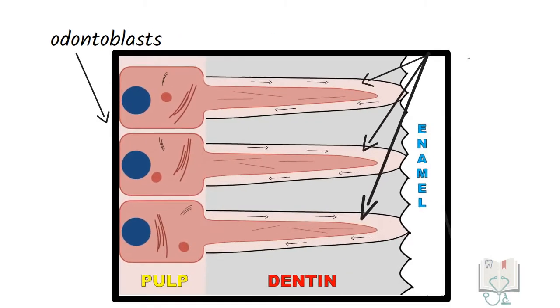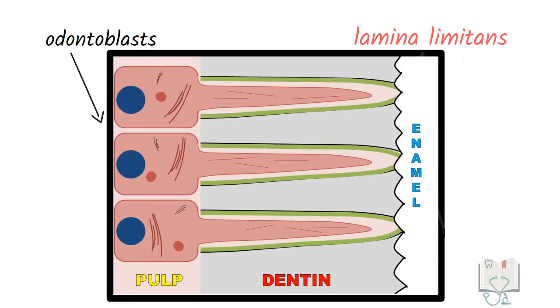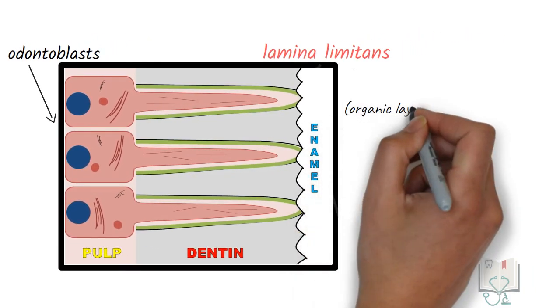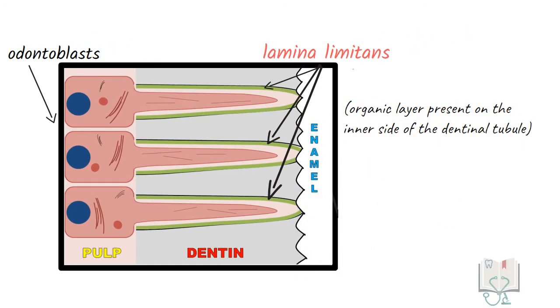Lamina limitans. Lamina limitans literally means the limiting membrane. It is an organic layer present on the inner side of the dentinal tubule. It is rich in glycosaminoglycans.